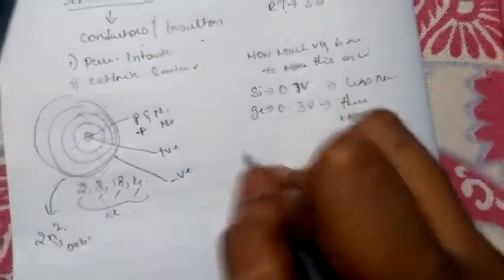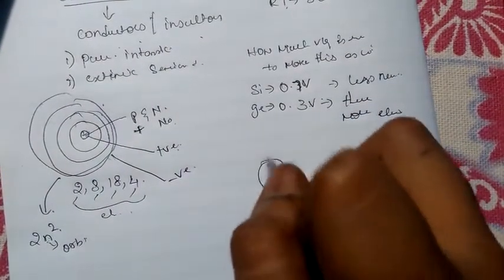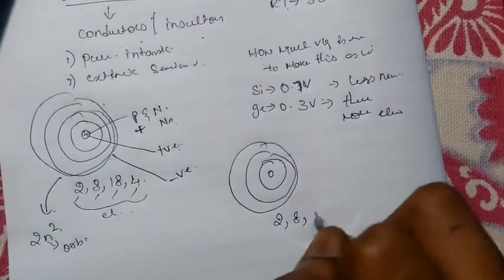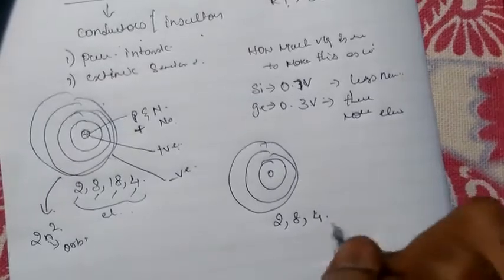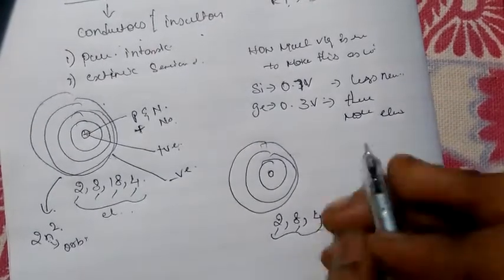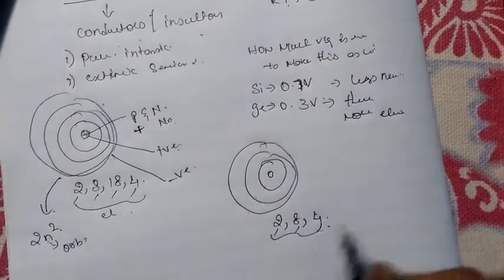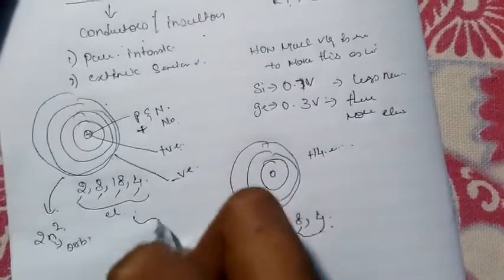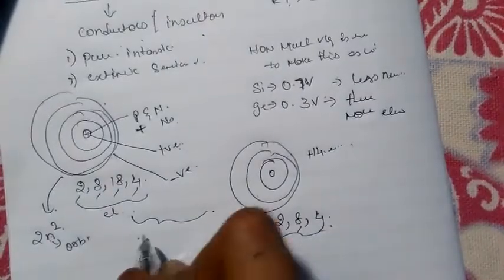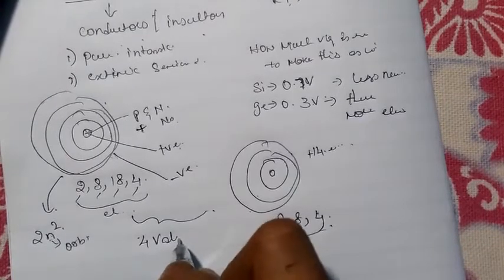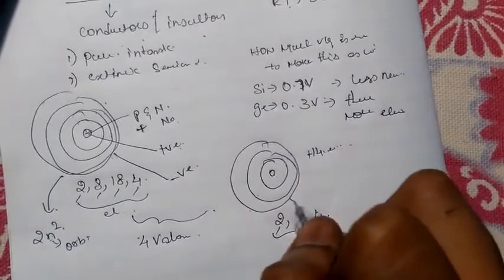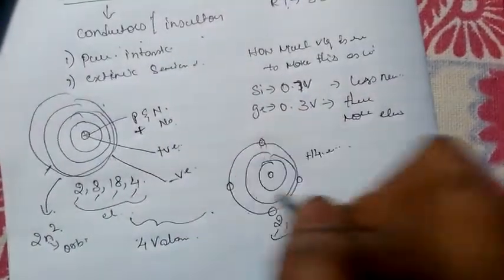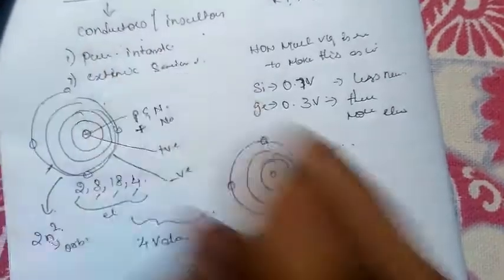Silicon has three orbits, with electrons arranged as 2, 8, and 4, giving a total of 14 electrons. Both germanium and silicon have four valence electrons in the outermost orbit, which is called the valence band.